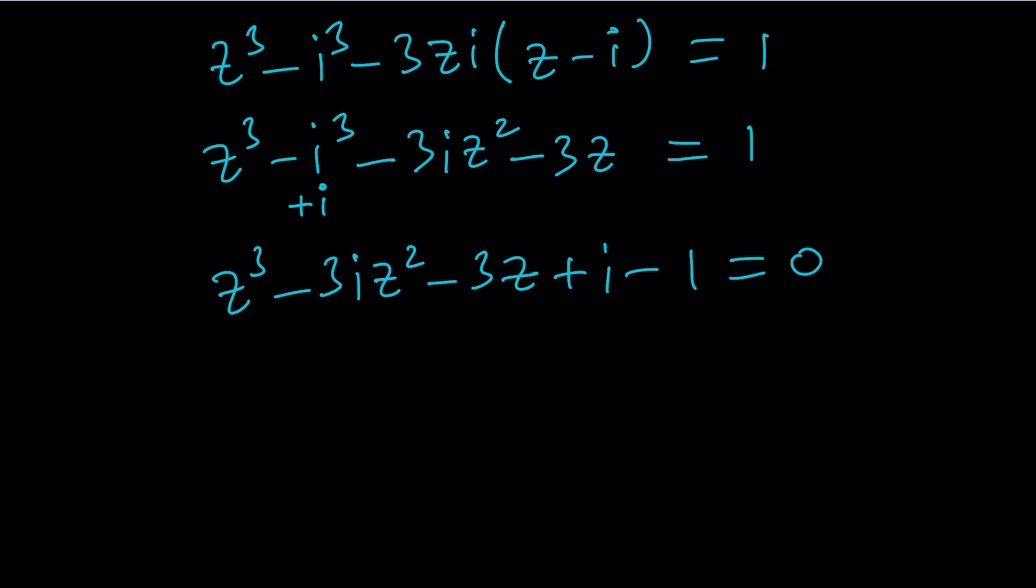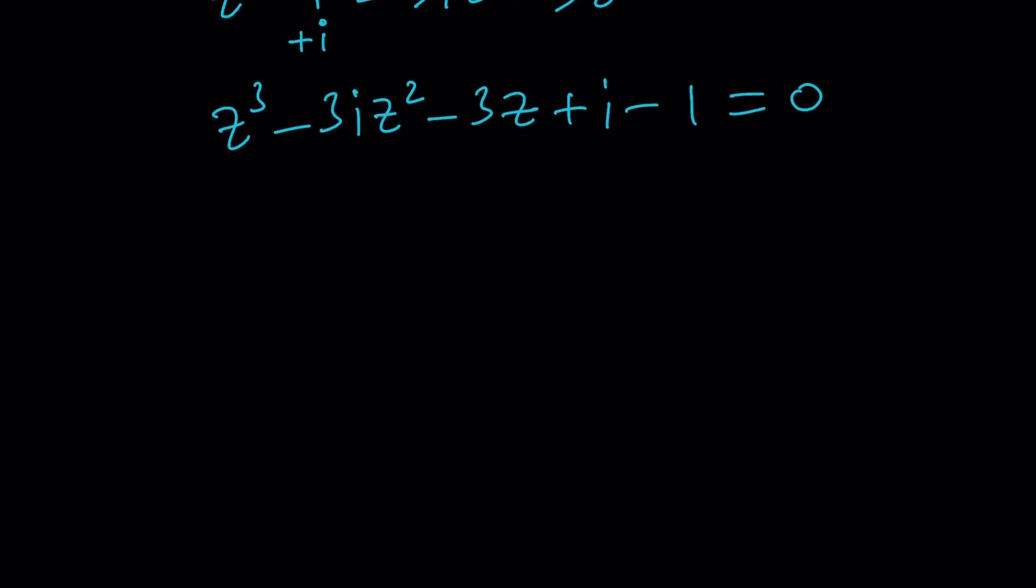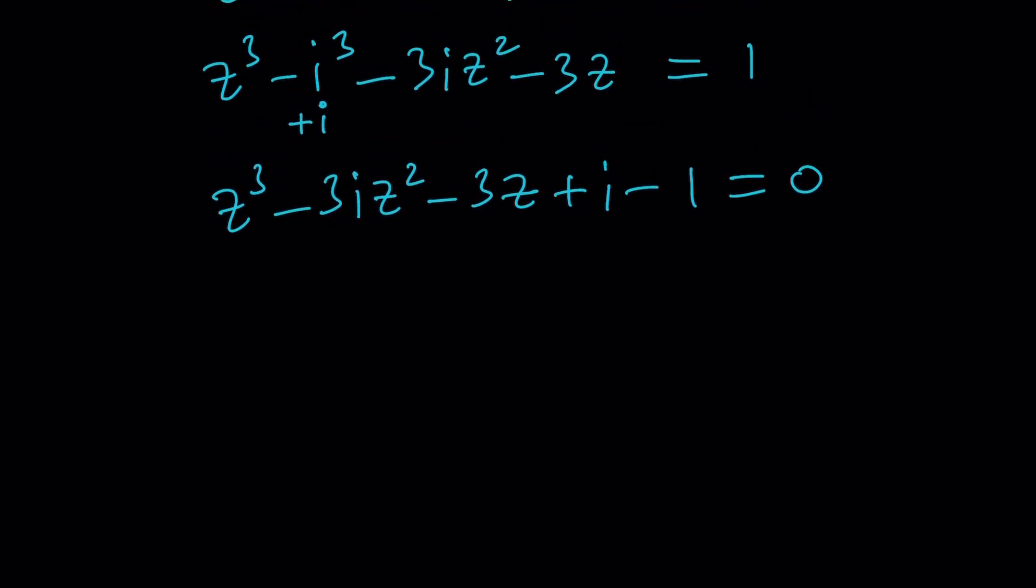So how do you solve something like this? This is a cubic equation. It's cubic in Z. And if we can solve it, at least find one solution, and by division we can find the other solutions. So we can use something called the cubic formula. But the cubic formula requires that Z squared not exist. So to get rid of Z squared, we're going to need to replace Z with something.